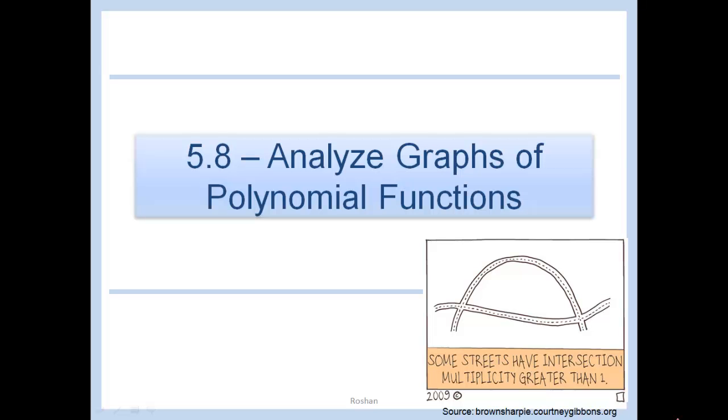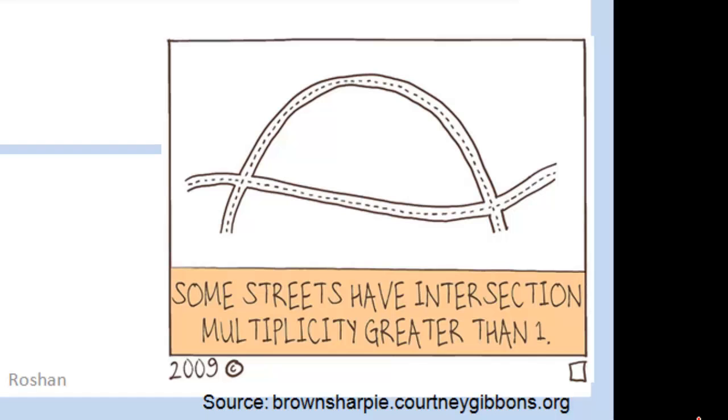Analyze Graphs of Polynomial Functions. This comic is saying, remember, if it had multiplicity 1, then it just crossed the axis.